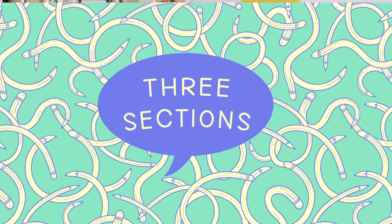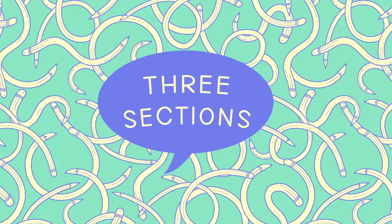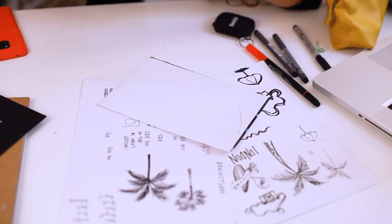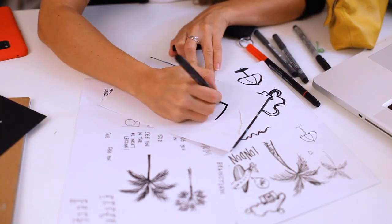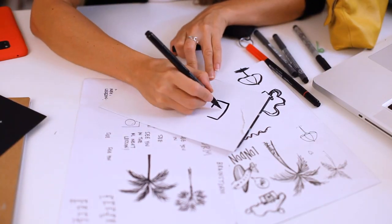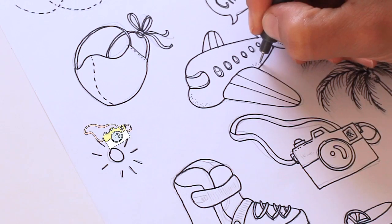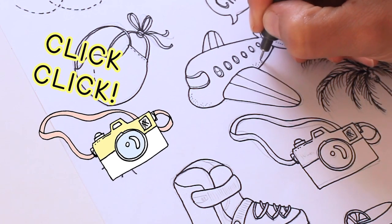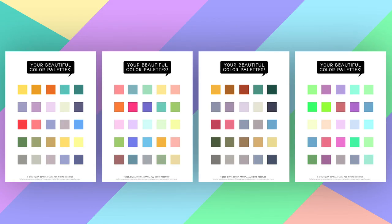This class is divided into three main sections. In the first section we'll be working on our assets: brainstorming, creating our sketches and digitizing them. We'll create color palettes and I'll show you various tools that will help you get out of your color comfort zone.